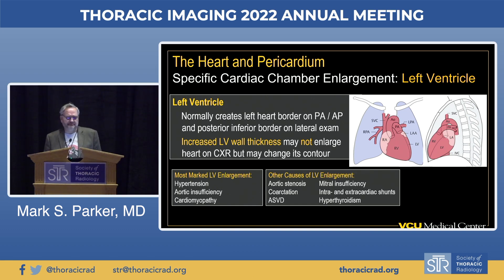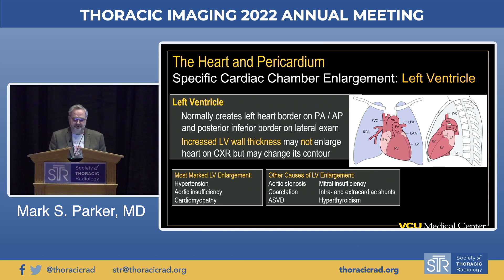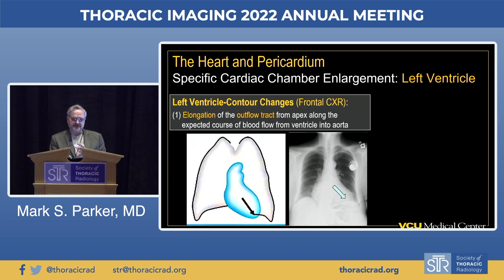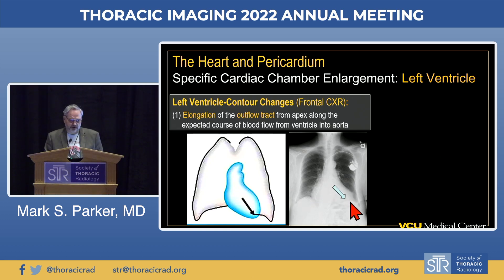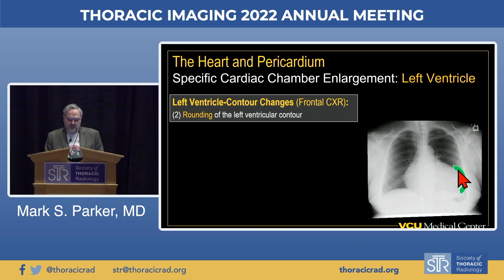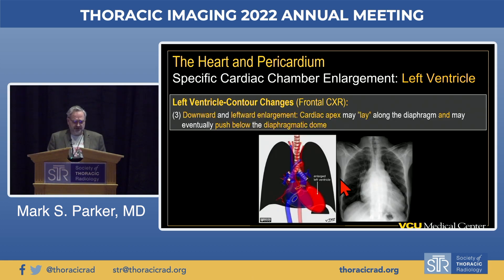Other causes of left ventricular enlargement include aortic stenosis, coarctation, atherosclerotic vascular disease, mitral insufficiency, various intra- and extracardiac shunts, and hyperthyroidism. On the frontal radiograph, one of the first changes seen is elongation of the left ventricle along the expected axis of blood ejection from apex to aortic root. The chamber may hypertrophy with rounding, and with progressive enlargement, the cardiac apex may lay along the diaphragm or even push below it toward the gastric fundus.